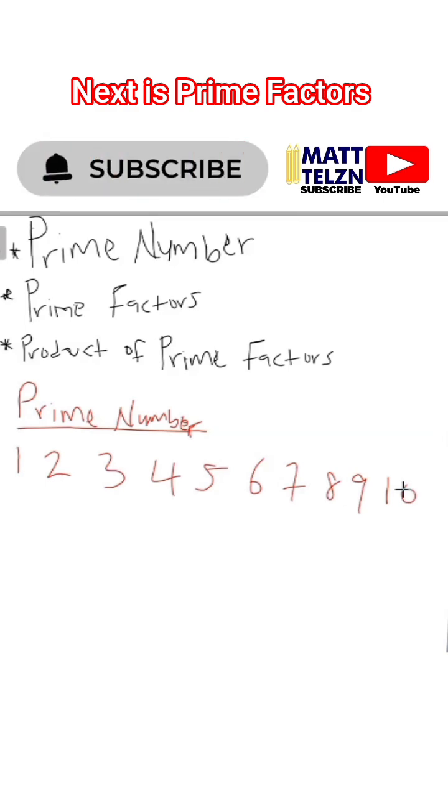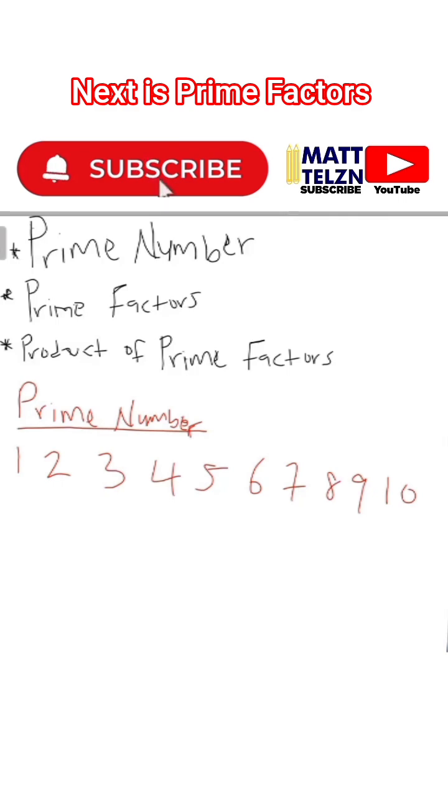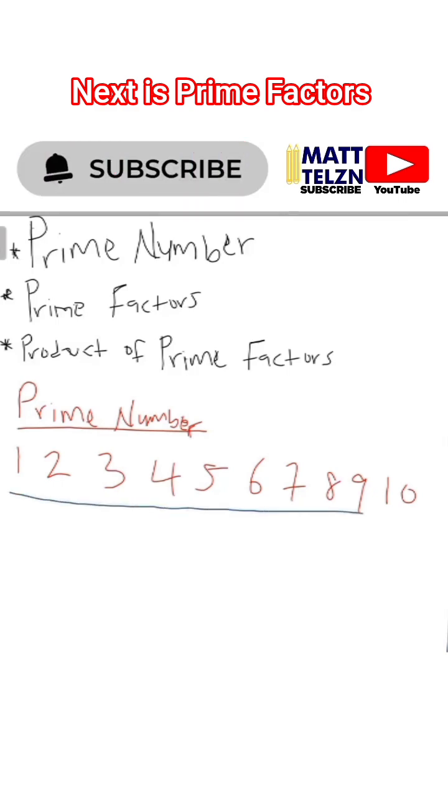Now, if we look at from the definition of what a prime number is, we said it's a number that has two factors, one and itself. Now, look at these arrays of numbers we have here. If you are to list the factors of them one after the other, the factors of one are what? Just one and one.